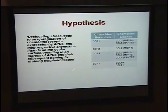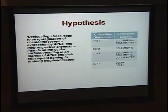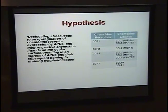We've been looking at four chemokine receptors. CCR1, CCR2, and CCR5 are expressed by immature antigen-presenting cells, responsible for mediating trafficking of antigen-presenting cells to sites of inflammation. CCR7 is expressed on mature APCs and is responsible for facilitating trafficking to lymph nodes.